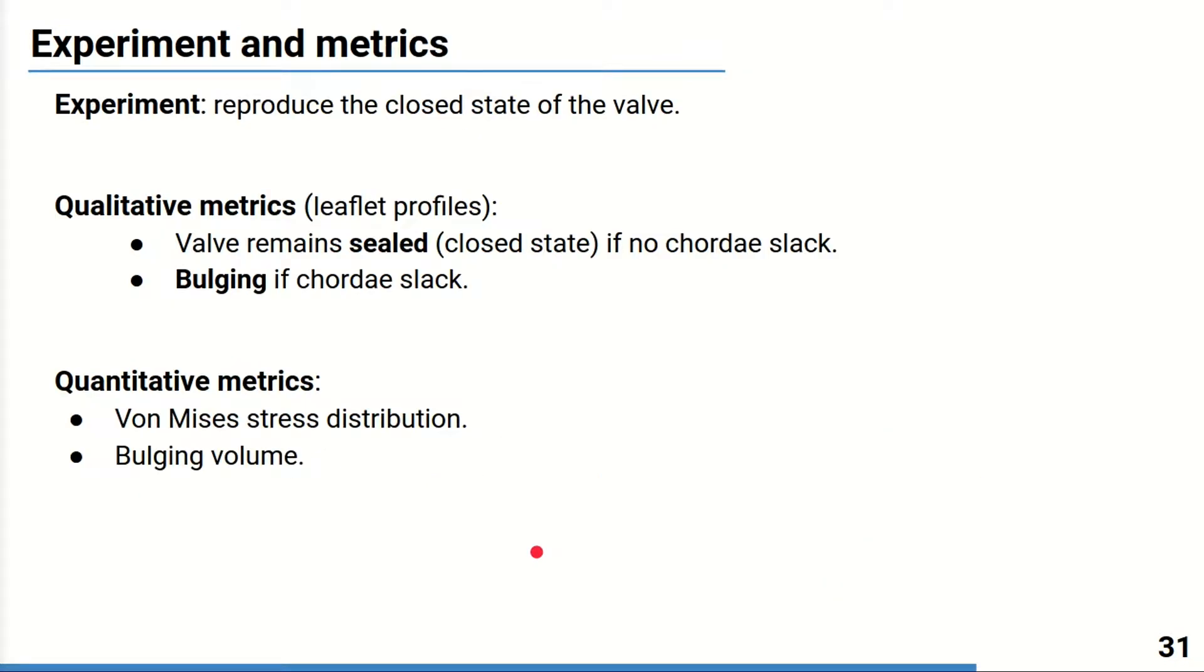In our experiments we reproduce the closed valve state. In order to evaluate the results we must first of all check the coherence of the simulated valve behavior. The valve must remain sealed if the chordae are not slack and otherwise more leaflet bulging must be observed. To quantify the results we propose to use two metrics: first one is von Mises stress distribution and the second one is the bulging volume which is the volume between the leaflet surface at the beginning and at the end of the simulation.